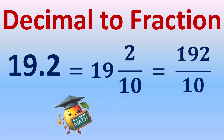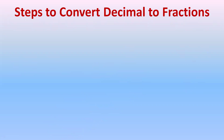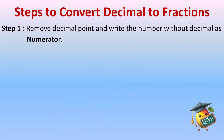Hi everyone, today we'll learn how to convert decimals into fractions. Let's begin. The first step is to remove the decimal point and write the number without the decimal as the numerator. For example, if we have the decimal number 16.12, we just remove the decimal and write the number as it is in the numerator.